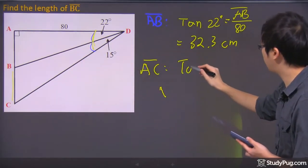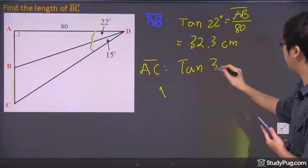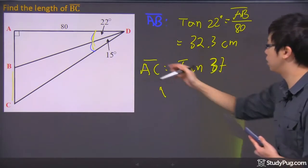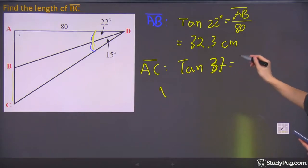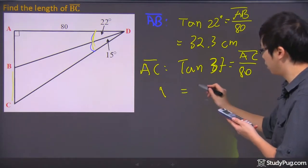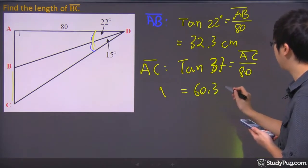So it will just be tangent once again. Using the tangent 37, using these two triangles together, it's equal to the length of A to C, divided by 80 again. So I'm going to go tangent 37, and I'm going to multiply by 80. A little bit of cross-multiplying, I get myself a 60.3 centimeter.